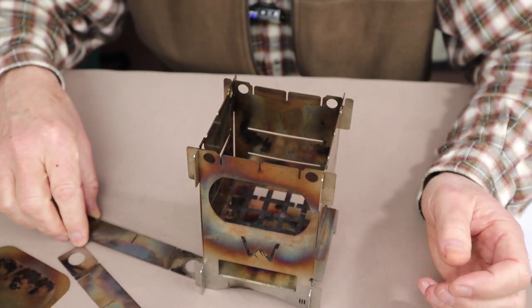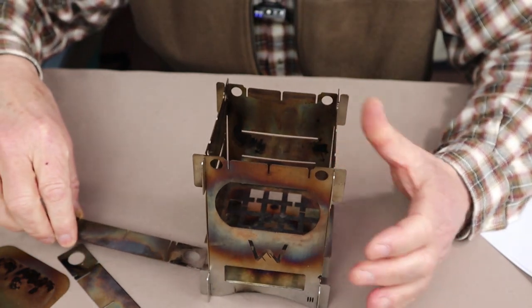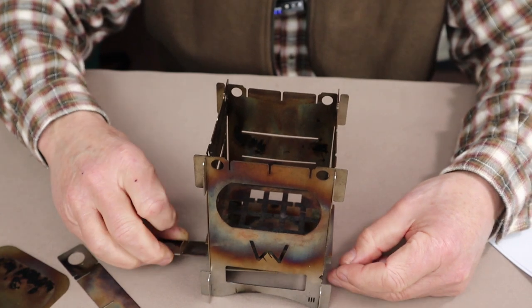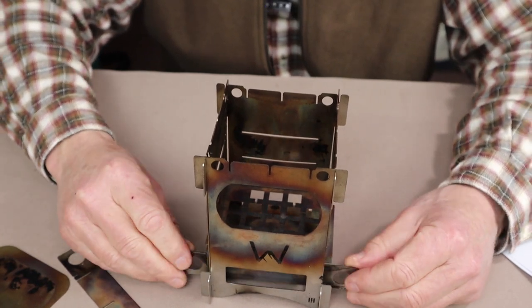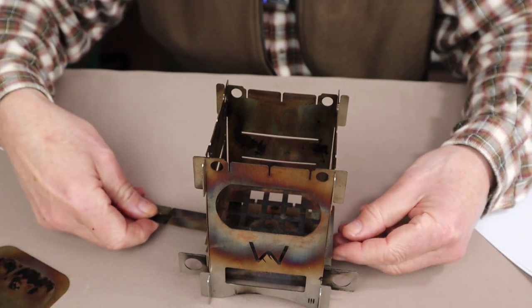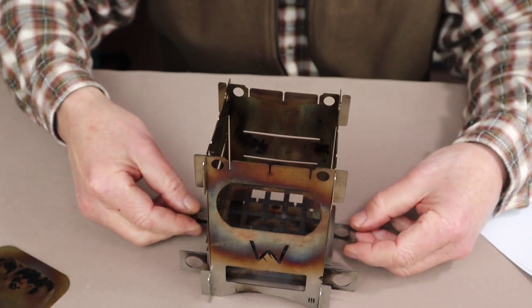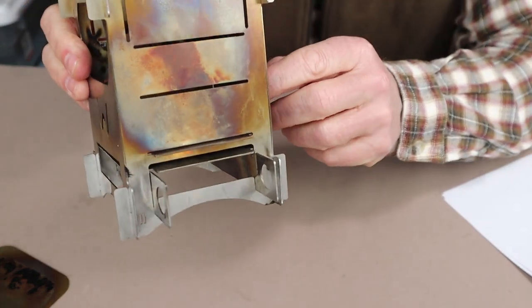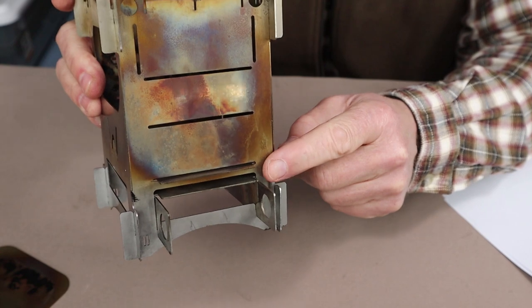So you begin by taking one of your pot supports, sliding it underneath the ash pan, and rotating it into position, and it will rest in some small slots at the base of the sides of the panels. And once those are in position, you can see just how much it's lifted the ash pan so there is a very minimal amount of air entering in on each side.